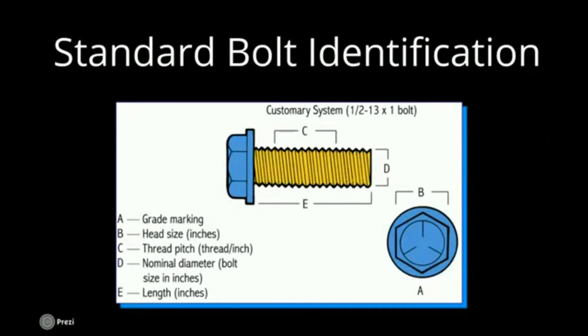C is the thread pitch, and the thread pitch is the number of threads per inch. That's on a standard bolt. So the number of threads in an inch.